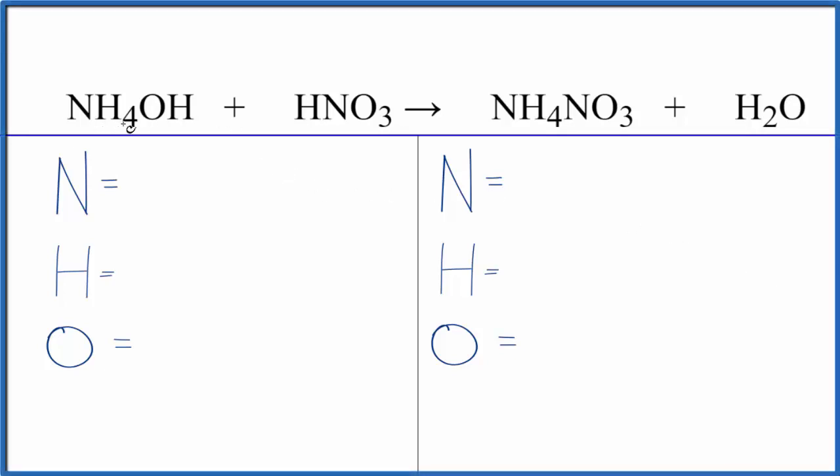To balance this equation, NH4OH plus HNO3, that's ammonium hydroxide plus nitric acid, let's count the atoms up.